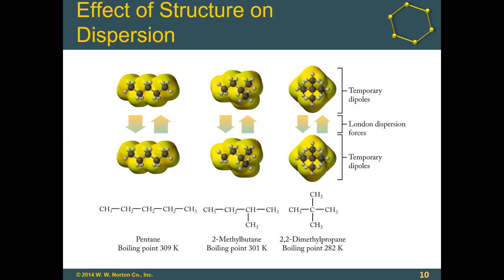The proof is in the boiling points. Pentane has a boiling point of 309 Kelvin — just above room temperature, so at around 293 Kelvin it would still be a liquid. 2-methylbutane has a boiling point of 301 Kelvin — still a liquid, but it will boil a little more easily. And 2,2-dimethylpropane has a boiling point of 282 Kelvin, which is lower than room temperature, so that would be a gas at room temperature. We'd have to bring the temperature down to about 273 Kelvin — the freezing point of water — to turn it into a liquid. This really comes back to polarizability.